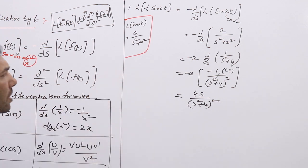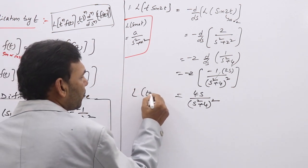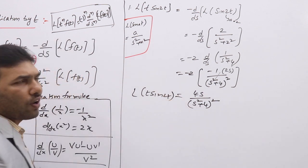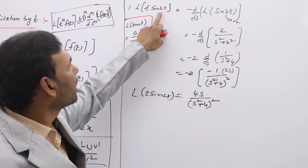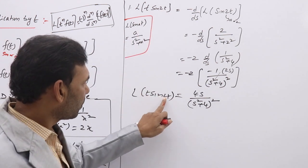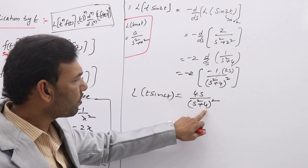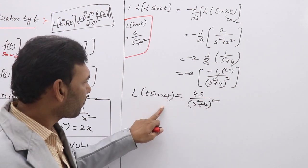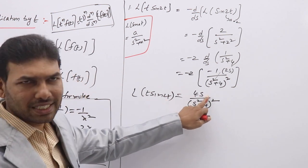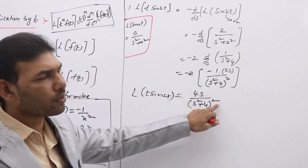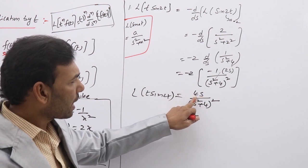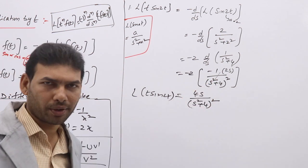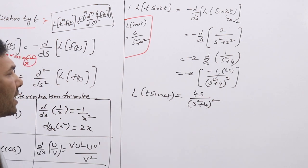The answer for L{t·sin(2t)} is 4s/(s²+4)². There is a useful pattern: if you have a = 2, you get 4s/(s²+4)²; if a = 3, you get 6s/(s²+9)²; if a = 4, you get 8s/(s²+16)². One can easily identify the solution before solving.